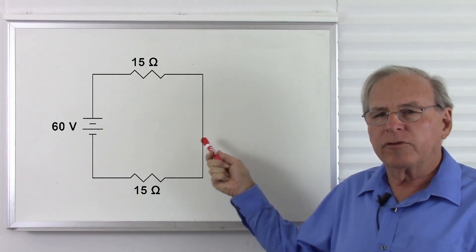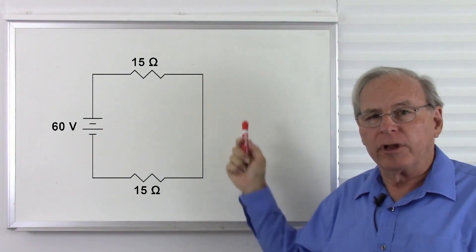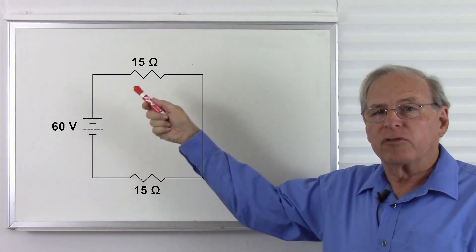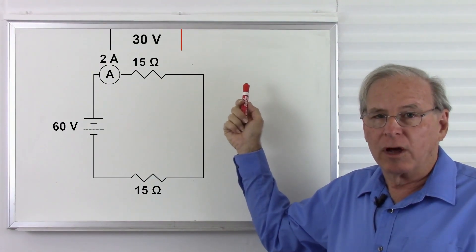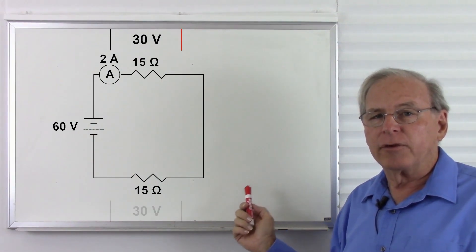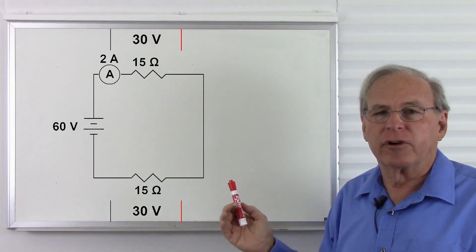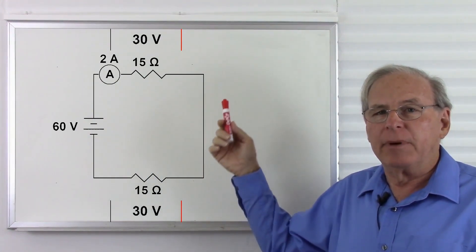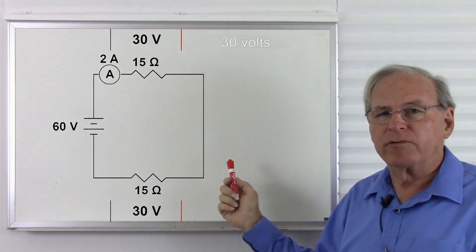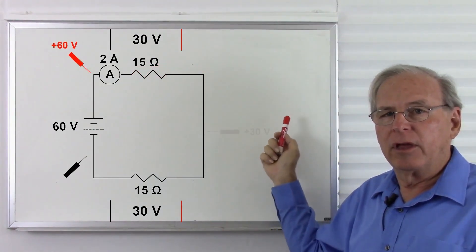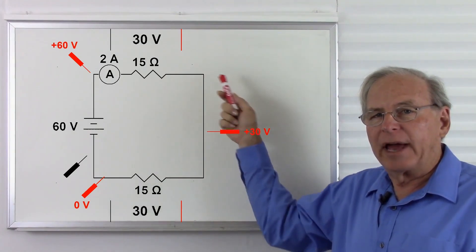I took the 10 ohm resistor and the 5 ohm resistor and made them a single 15 ohm resistor — so I now have two 15 ohm resistors for a total of 30 ohms. I still have 60 volts, so I still have two amps. Two amps through a 15 ohm resistor gives 30 volts by Ohm's law — and same for the other 15 ohm resistor. So if the resistors are the same, the voltage is the same. I lose 30 volts here and 30 volts here, giving me 60 volts, 30 volts, then zero volts — half of my voltage in between two equal resistors.